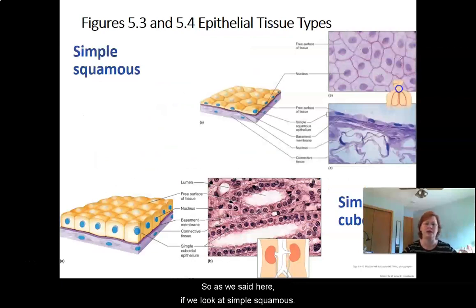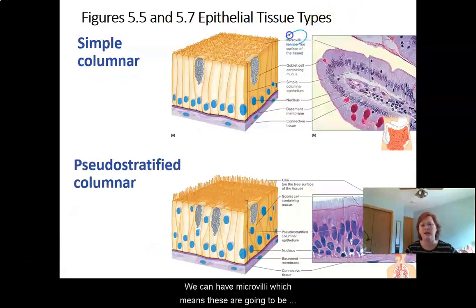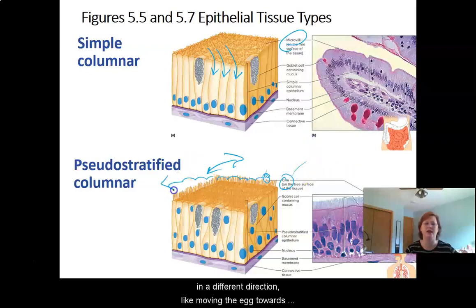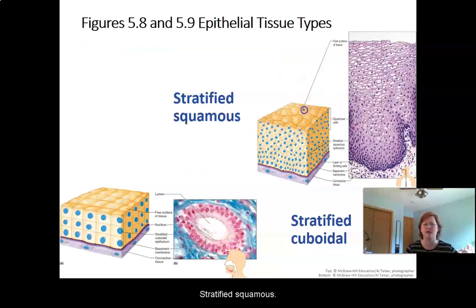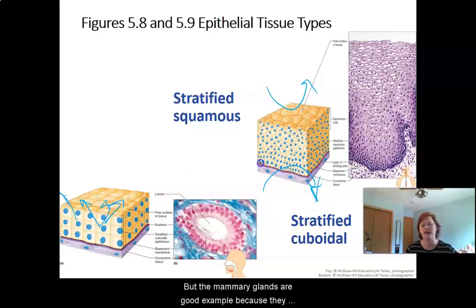Simple squamous is a nice thin layer, making it easy to diffuse stuff across it. Cuboidal is really good at secreting. Columnar can have microvilli, making it good at absorbing nutrients, or cilia that wave back and forth to move particles — like moving the egg toward the uterus or moving inhaled particles stuck on mucus upward so you can cough or sneeze them out. Stratified squamous is for keeping stuff in and out — protection. Stratified cuboidal, not seen in many places, but mammary glands are a good example due to their secretory function.